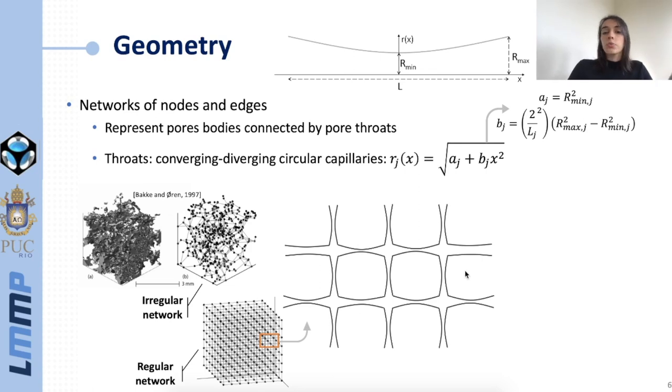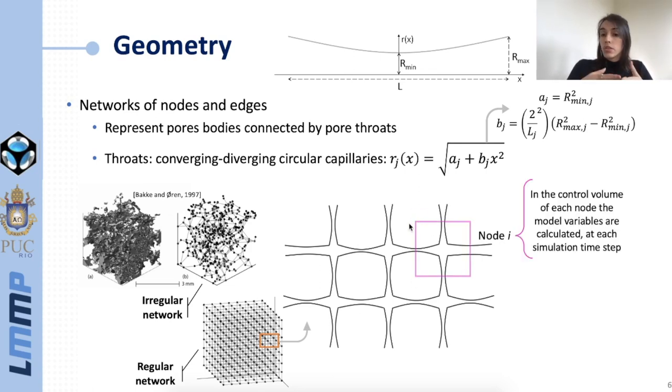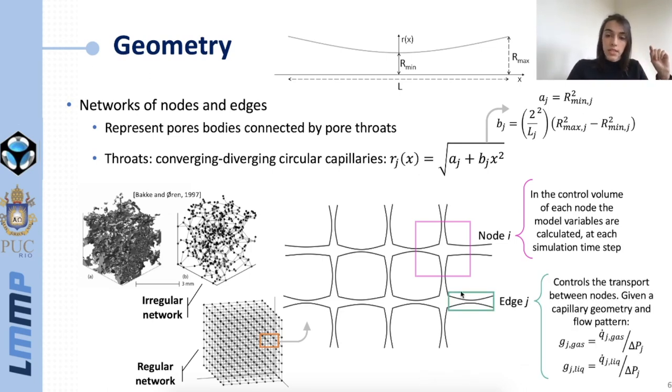If we zoom in a small part of the network, this is what the structure would look like. This is what we define as a node and in the control volume of each node the model variables are calculated in each simulation time step. This is what we define as an edge. The edges are important because they control the transport between the nodes. To quantify this transport we have to, given the capillary geometry and the flow pattern, calculate the conductances for both phases. The conductances are the ratio between the volumetric flow rate and the pressure drop in the capillary.